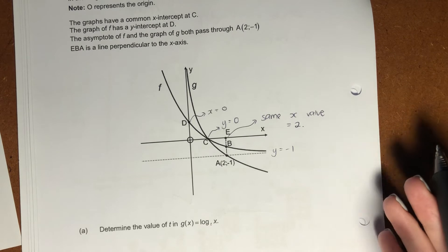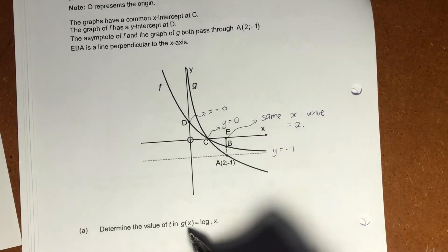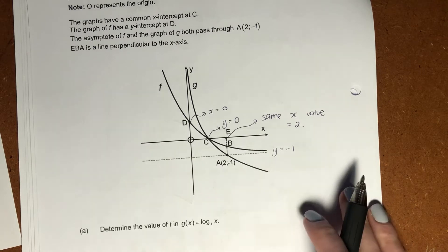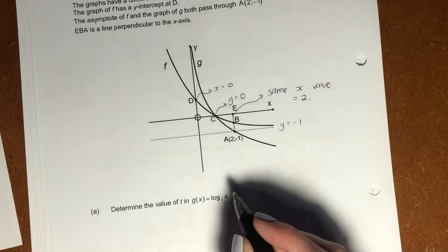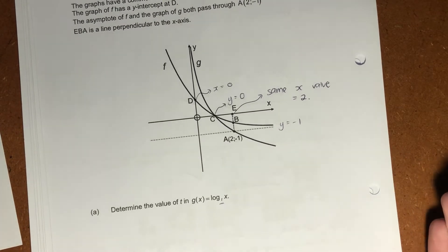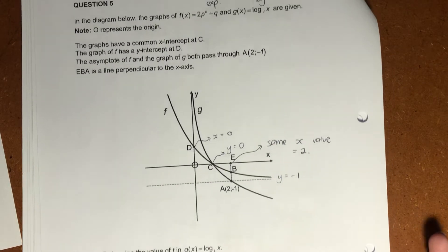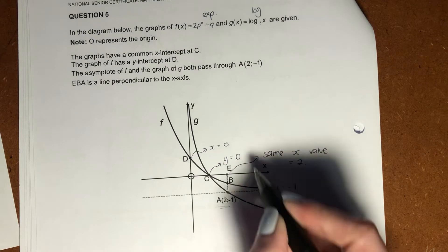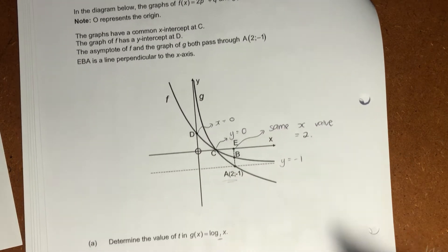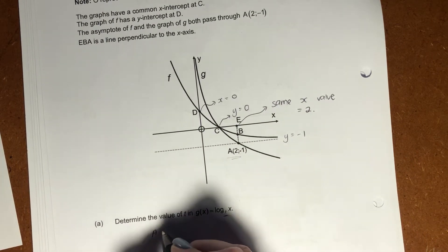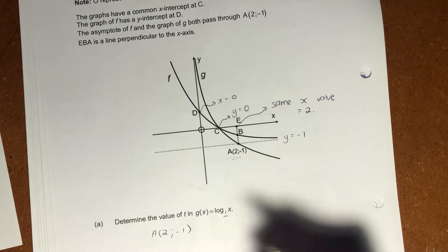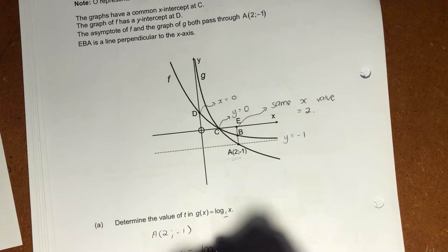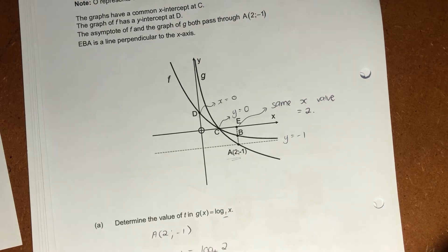And then it says, determine the value of t g(x) in g(x) equals log_t(x). So effectively, what we're going to do is we're wanting to find that t value there. What do we know about the g(x)? We know that it goes through this point here. There's my g(x). It goes through a, so it's going to be a substitution exercise. So we're going to say, okay, our y value is going to equal log_t of 2.